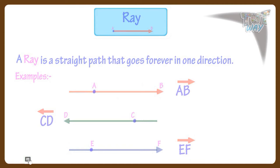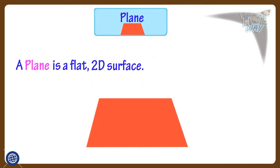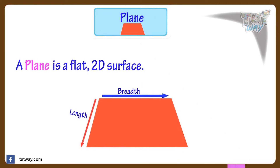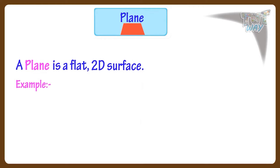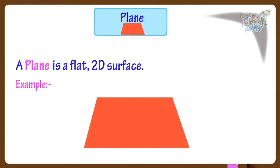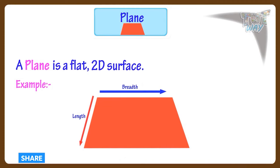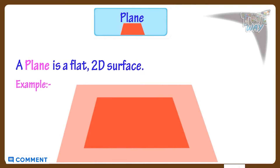Now let's learn what is a plane. A plane is a flat 2D surface that has only two dimensions — length and breadth — and goes on forever in all directions. For example, if we are drawing something on a flat surface like paper, a wall, or a floor, we are drawing on a plane. A flat surface that goes on forever is an example of a plane.